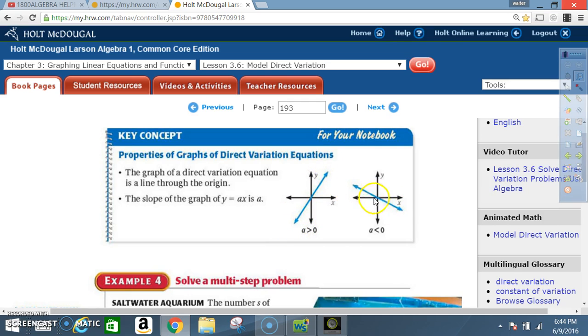Here, a is less than zero, and they're saying the slope is negative. The slope of the graph of y equals a times x is a. So, this position right here is the slope. Don't forget, this is called a slope and the constant of variation.